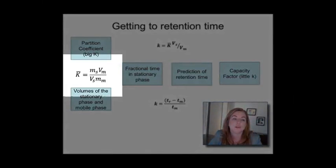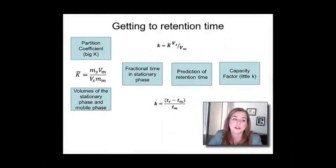Of course, there's K bar, which is our partition coefficient, which tells us where does an analyte want to be - does it want to be in the stationary phase or does it want to be in the mobile phase? And of course, there's the equal volume piece, which is just ms over m sub m, but you've also got to take volume into account.